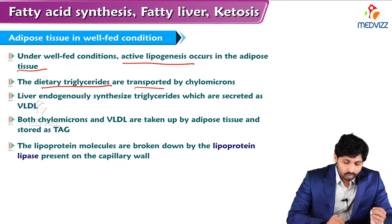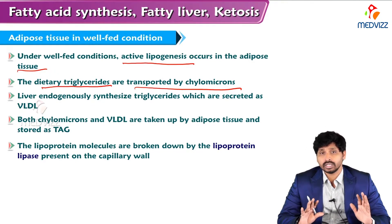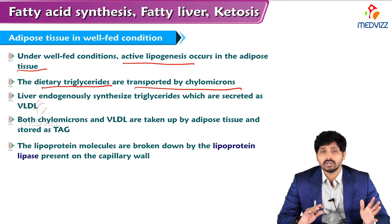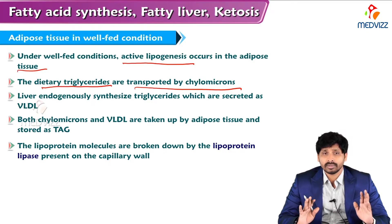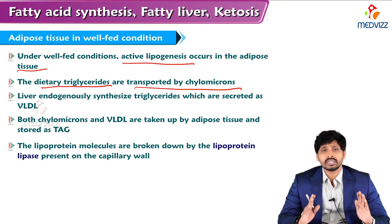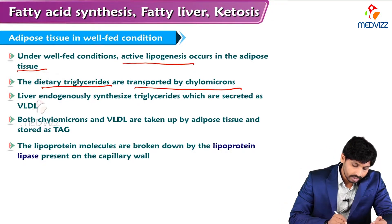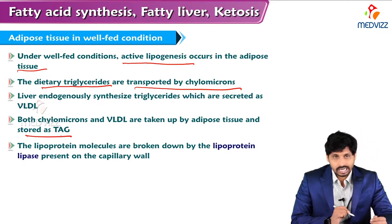The dietary TAG are transported by chylomicrons - these are the exogenous, dietary TAG. They are transported by chylomicrons to the liver, and from the liver - because liver is also capable of synthesizing TAG - that TAG, known as endogenously synthesized TAG, is transported to other parts of the body by VLDL, which is very low density lipoprotein. Both chylomicrons and VLDL are taken up by adipose tissue and stored as triacylglycerol.